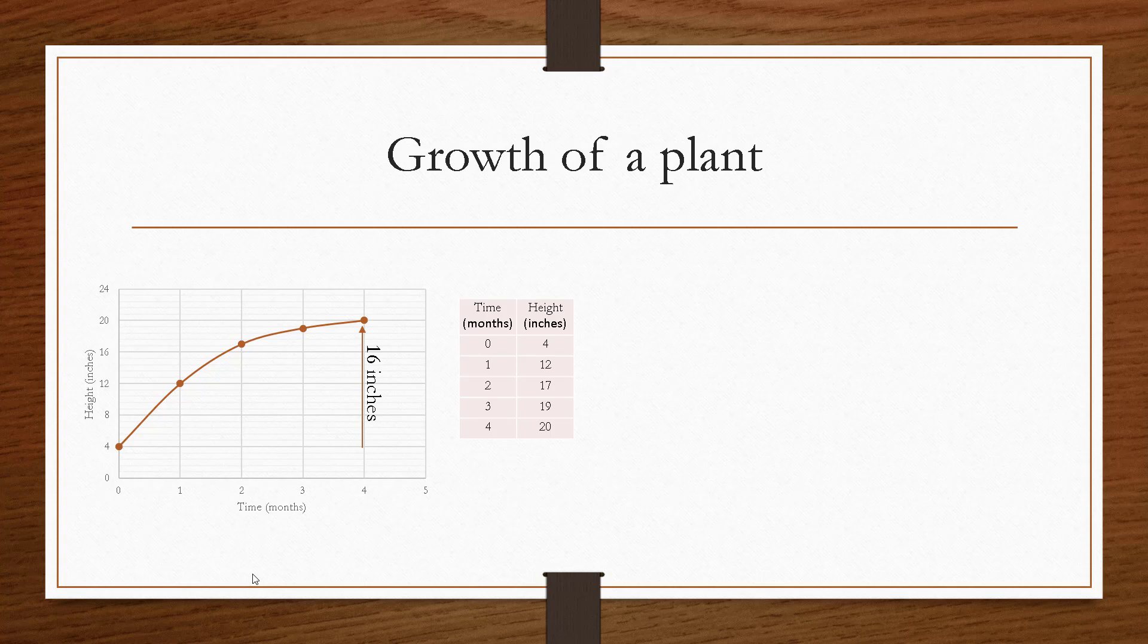So if we look at the calculation we did before, we said it grew a total of 16 inches over those four months. So four months is the change in x, and the change in y is 16 inches. When we took the average rate of growth, we did 16 divided by 4. That's just the slope of this blue line that I just drew.